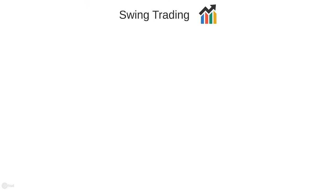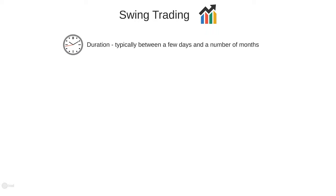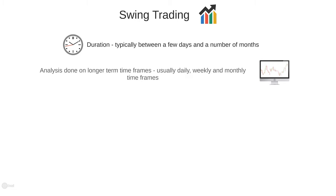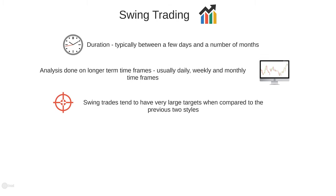The last style we are going to look at is swing trading. Swing trades pretty much cover anything longer than what we have looked at already, up to position trading. Swing trades can typically last anywhere from a day to a number of months or even longer in some cases. Analysis for these trades tends to be done on the daily, weekly and monthly timeframes. Due to the extended timeframe of these trades, the targets tend to be significantly larger than those targeted by the previous two styles. Looking at the ATRs on the daily, weekly and monthly timeframes will give you a good gauge of how large the moves can be.